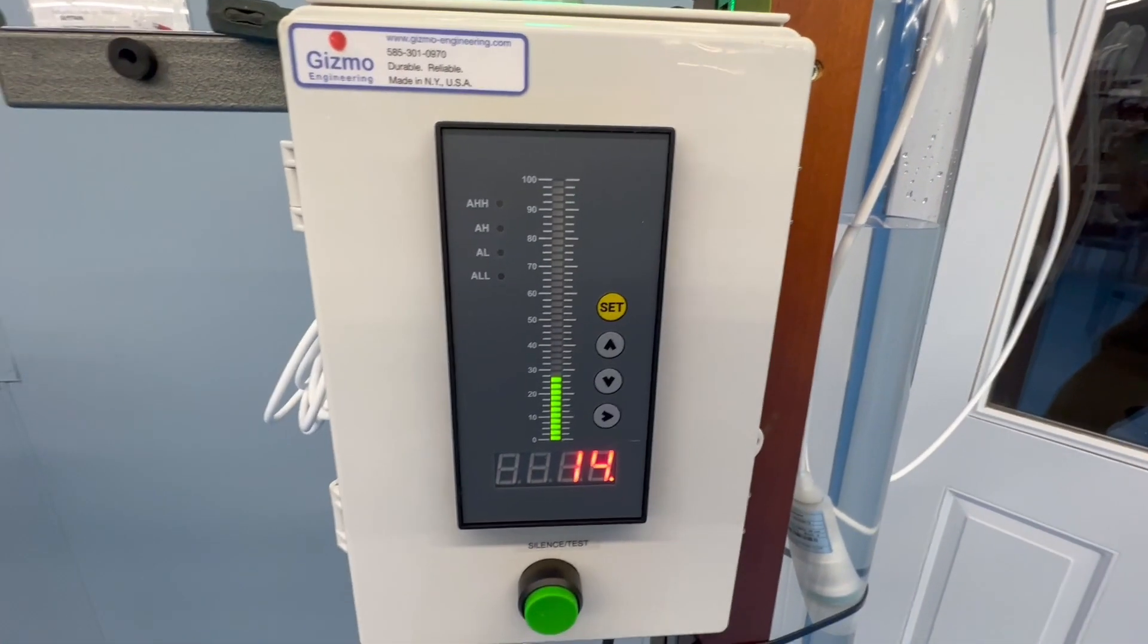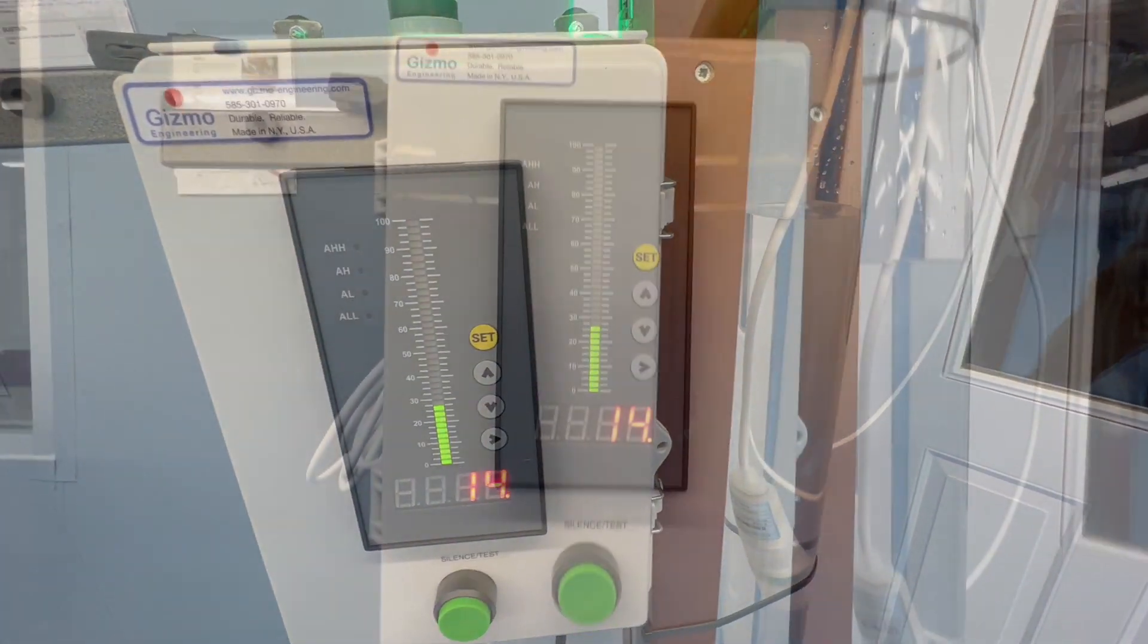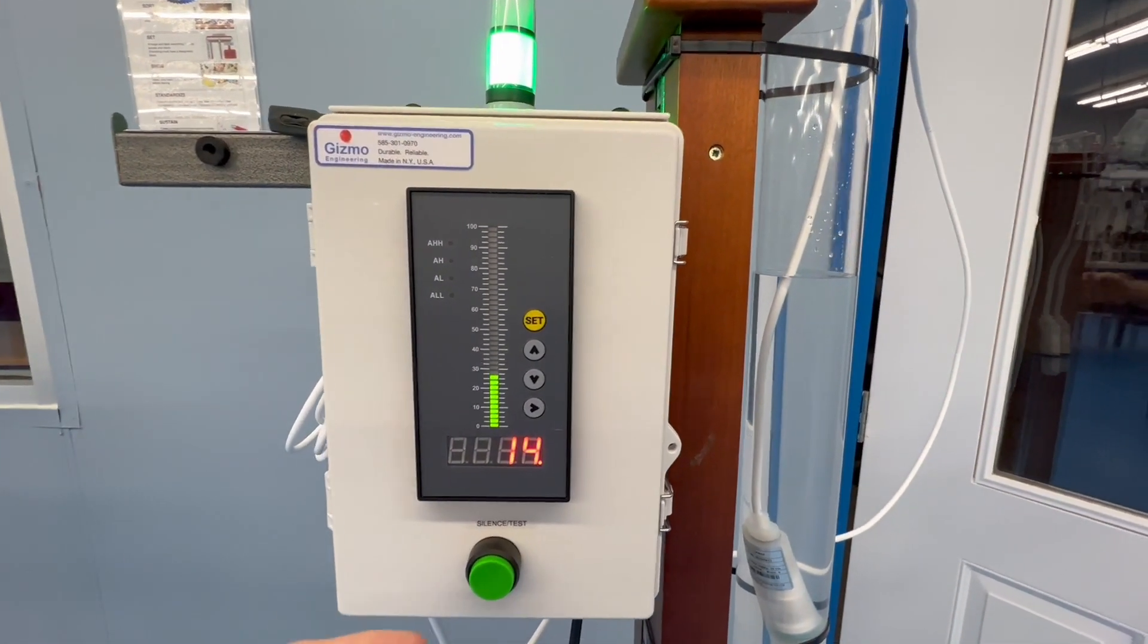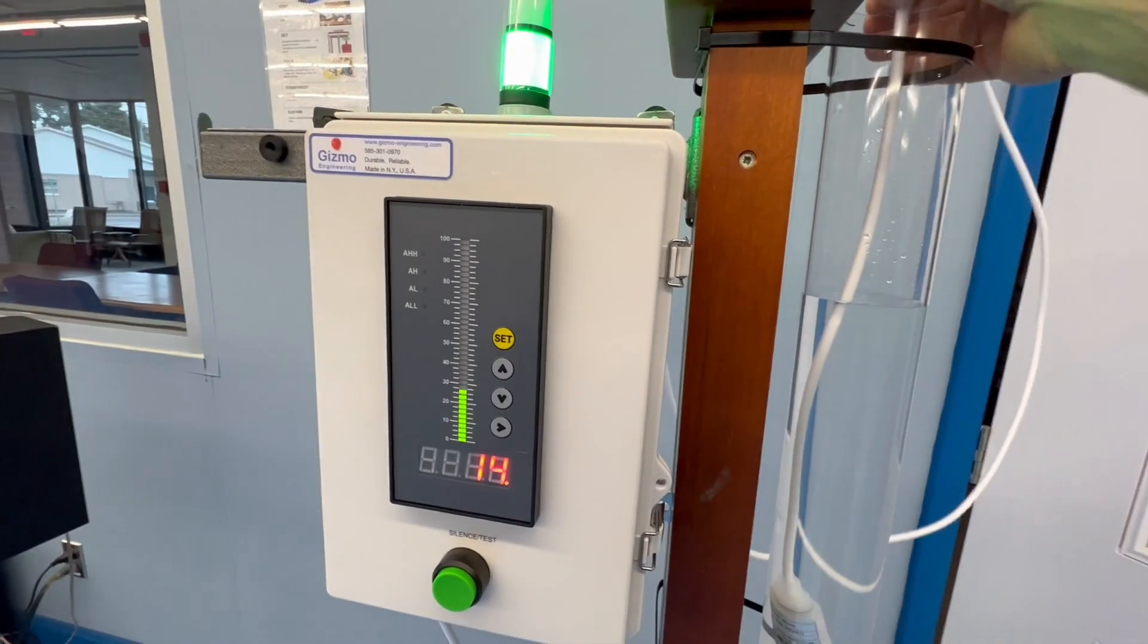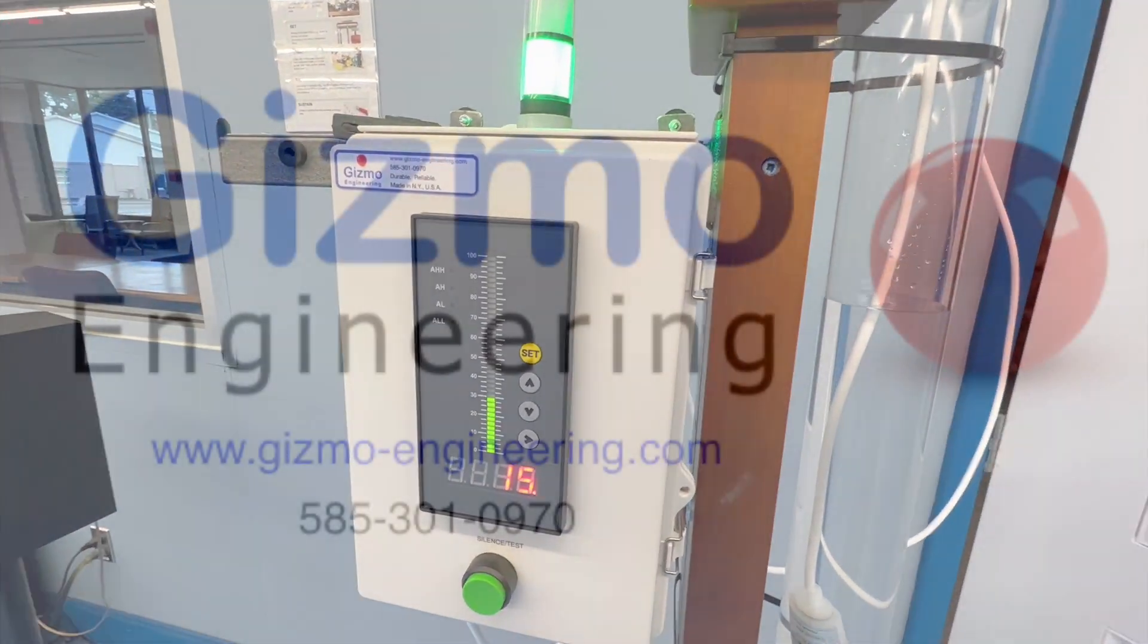So it's pretty much set and forget it. You just drop this in the tank and if you give us the tank depth when ordering we'll even set up the numbers for you so you don't even have to program it. You literally just drop the sensor in the bottom of the tank somewhere and mount the electronics box on the wall and it's good to go.